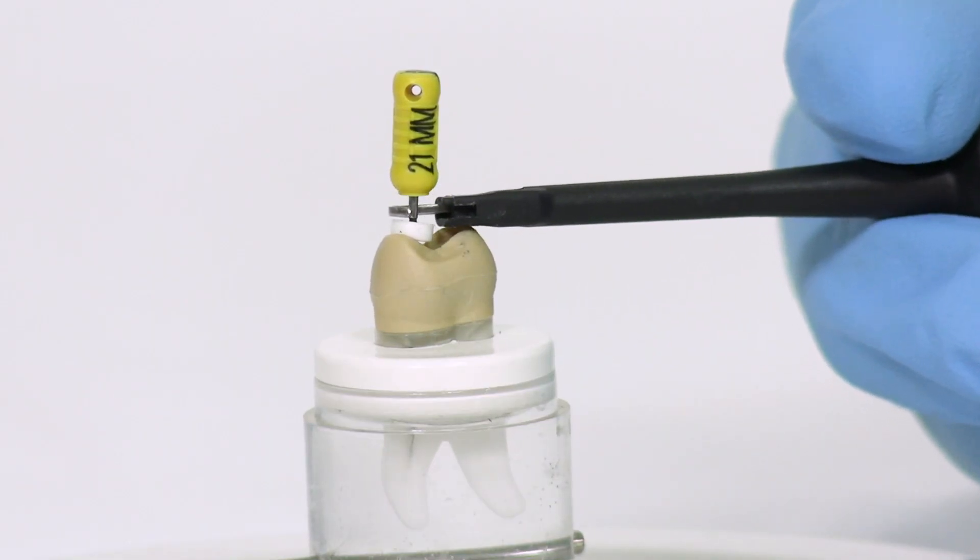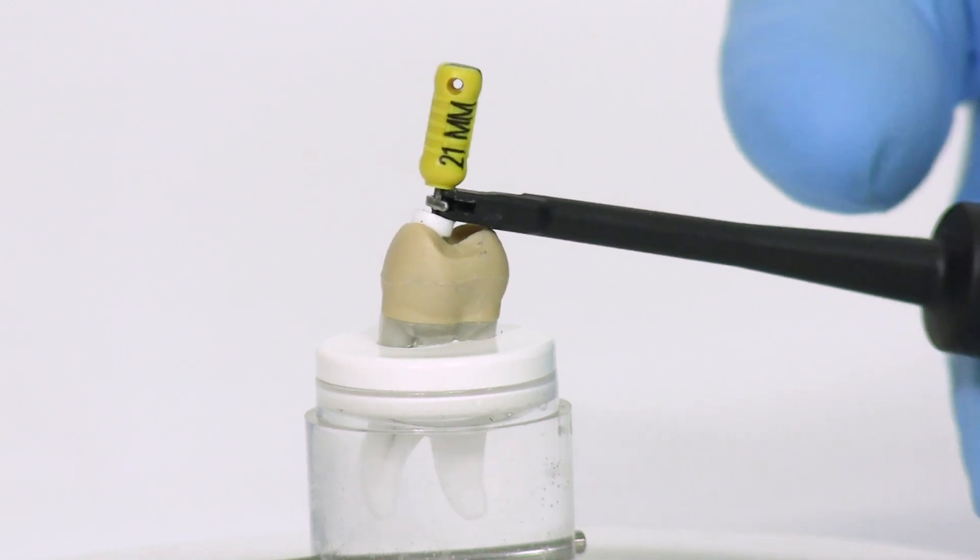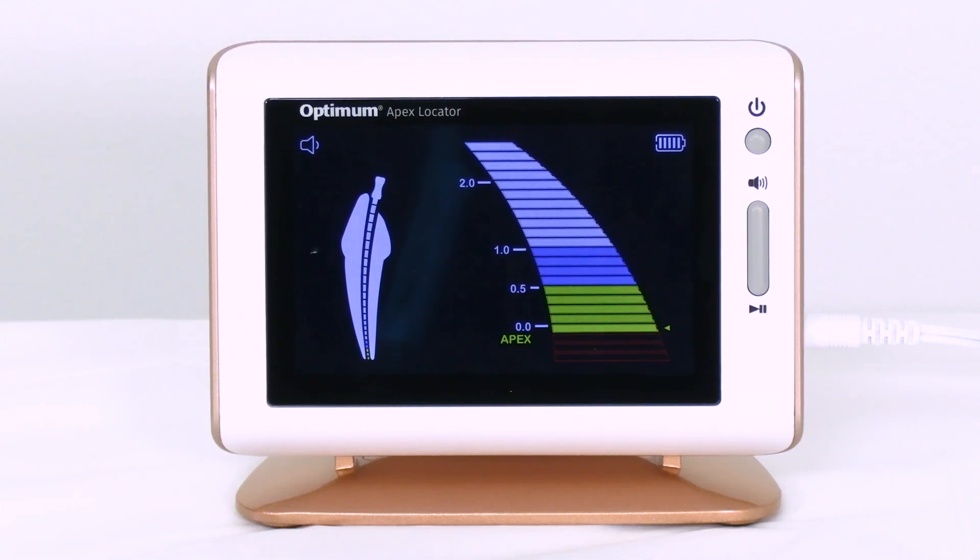Clip the file with the file clip and approach the apex. There will be a continuous alarm when the distance is less than 2 mm. When the indicating bar reaches the position of the dial 0.0 and the apex is displayed on the screen, the endophile has reached the anatomical apical foramen.